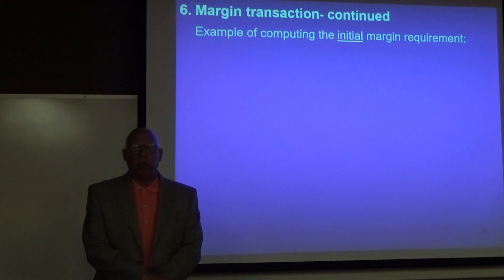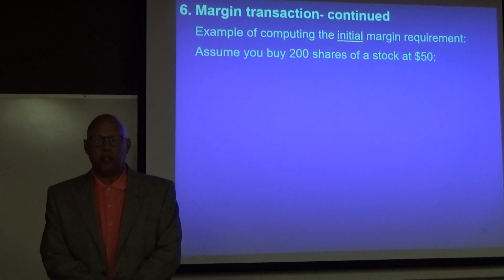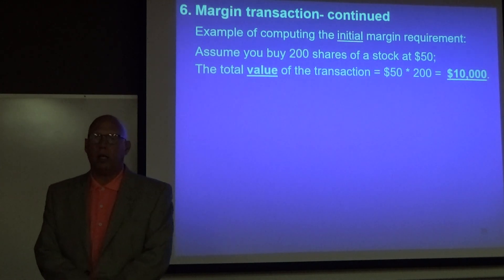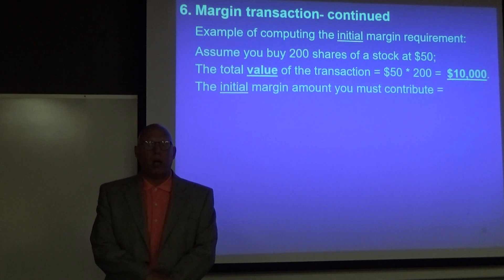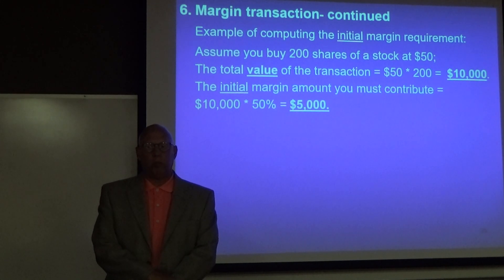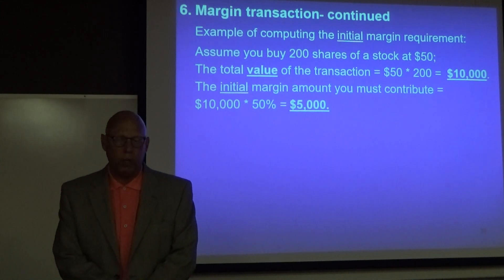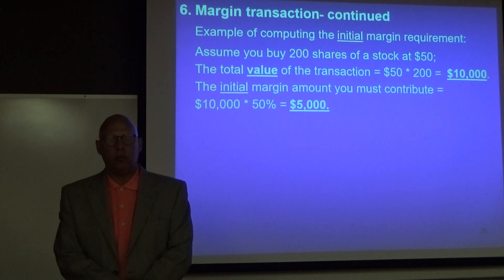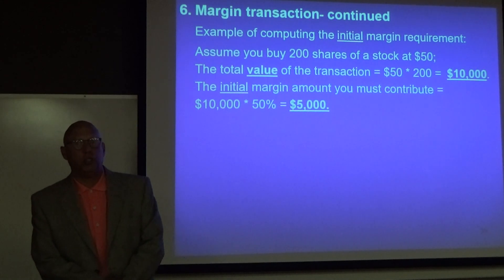Let's look at computing the initial margin requirement — very straightforward. Assume you buy 200 shares of a stock at $50. The total value of the transaction is $50 times 200 shares, which is $10,000. Multiply $10,000 by 50% to get your initial margin amount of $5,000. So you would borrow $5,000 from the brokerage firm, pay interest on that $5,000, and pay a commission to buy 200 shares of stock.